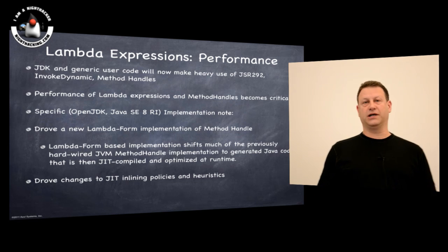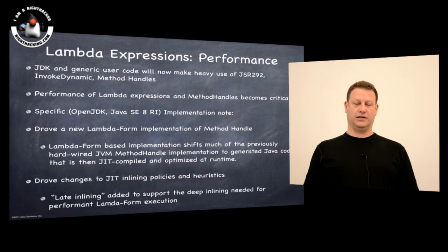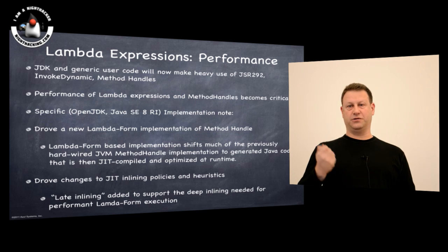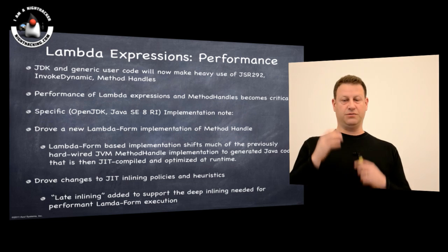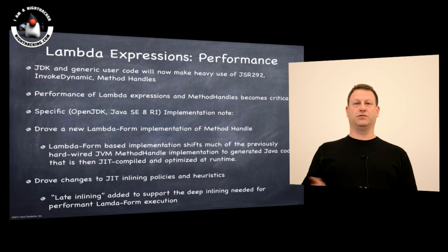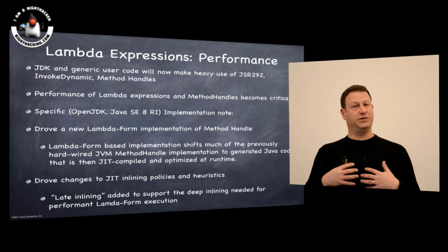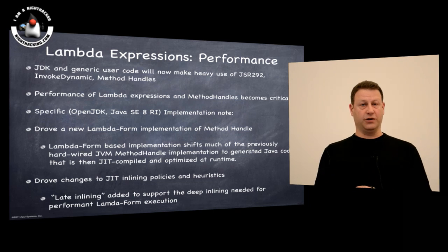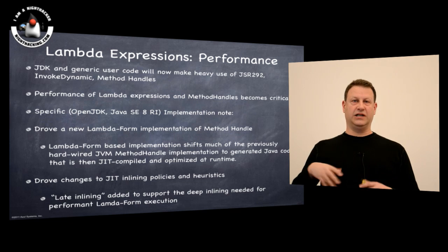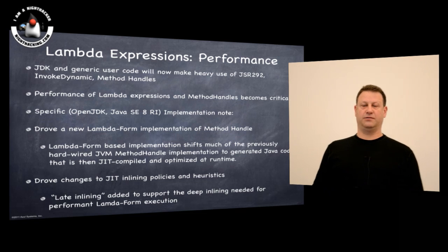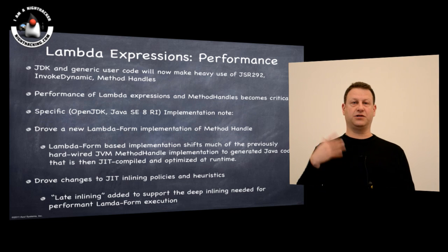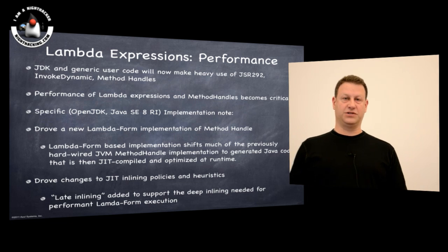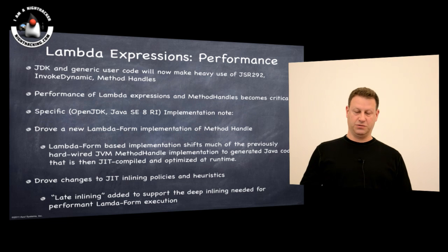In addition, there have been changes to the JIT compilers themselves. Method handles and Lambda forms need very deep inlining because you end up with a fairly complex structure that devolves, in most cases, to only a few instructions. So you want pretty deep inlining on these call sites, deeper than typical JIT compiler heuristics would have done in the past. There have been tweaks in specific implementations like OpenJDK to how inlining is done. Late inlining or dynamic or incremental inlining has been added so that once initial inlining is done, additional inlining decisions are applied to force Lambda forms to inline as much as possible.